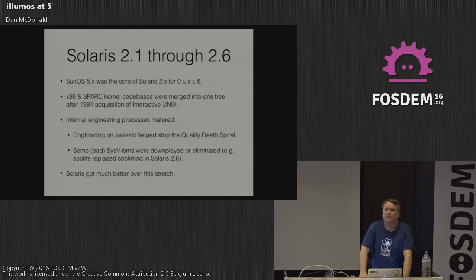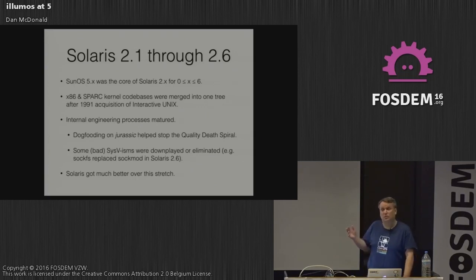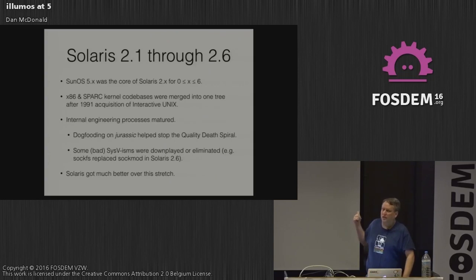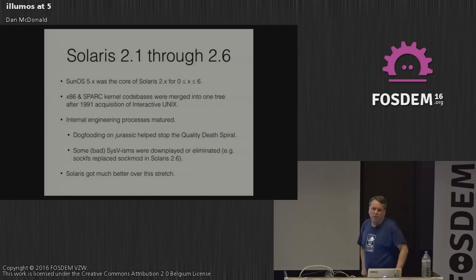During Solaris 2.5 and later, some Sys5-isms were replaced or downplayed — ask me offline about SockMod, it got replaced with a real kernel sockets implementation as late as Solaris 2.6. Solaris did get much better over this stretch. I was a customer and 2.4 was actually pretty good; I joined Sun for 2.5.1, 2.6, and beyond.